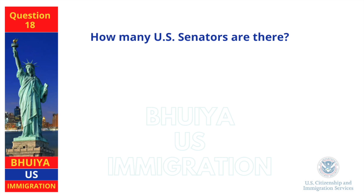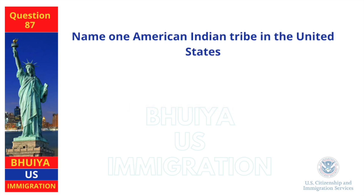How many U.S. senators are there? 100. Name one American Indian tribe in the United States. Cherokee.